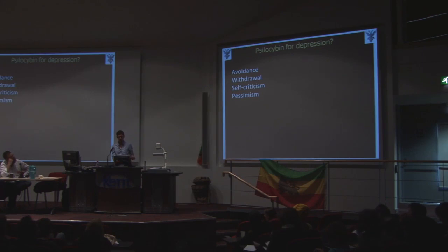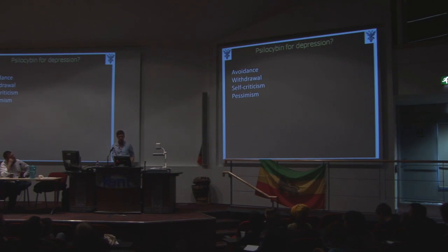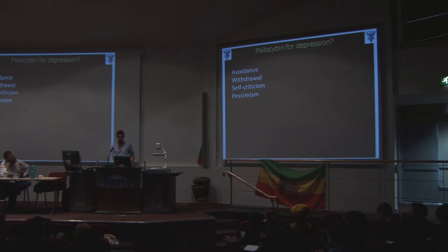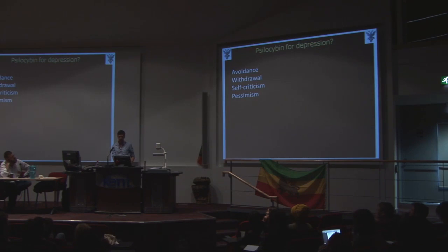The classic phenomenology of depression involves avoidance, social and emotional withdrawal, and self-criticism. There's an unyielding pessimism — you can treat the intensity of negative affect relatively well with first-line antidepressants, but this stubborn negative cognitive bias that characterises treatment-resistant depressed patients is especially difficult to treat. That is something which could potentially be a target for psilocybin or serotonin 2A agonism.